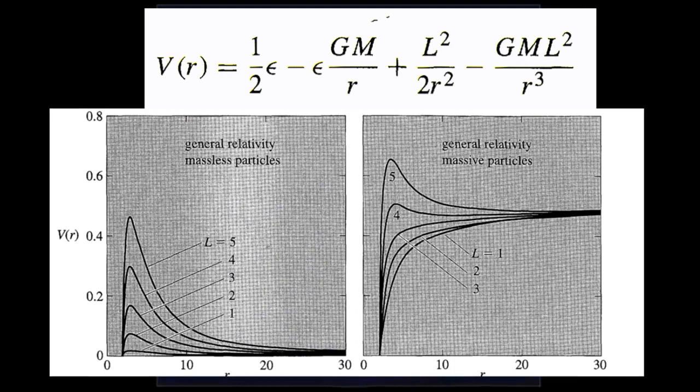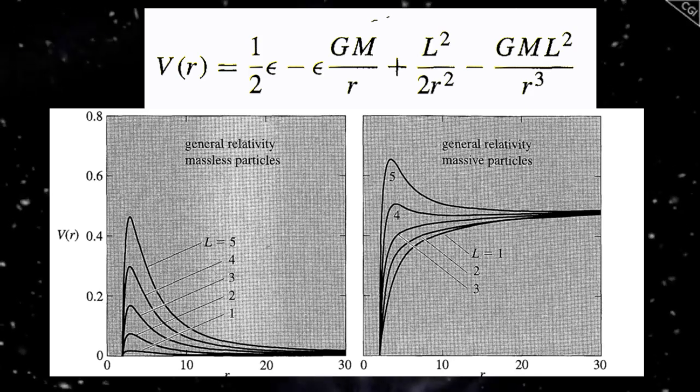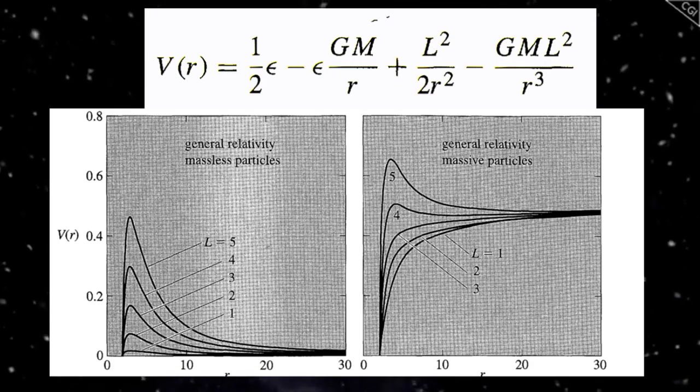With the previous considerations, we obtain the effective potential for the motion of a test particle as it appears on the screen. Epsilon equals zero corresponds to the motion of massless particles, while epsilon equal to one corresponds to the motion of massive particles.